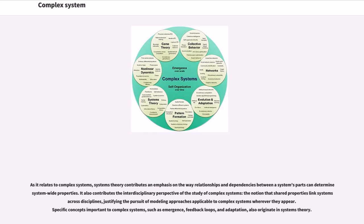As it relates to complex systems, systems theory contributes an emphasis on the way relationships and dependencies between a system's parts can determine system-wide properties. It also contributes the interdisciplinary perspective of the study of complex systems, the notion that shared properties link systems across disciplines, justifying the pursuit of modeling approaches applicable to complex systems wherever they appear. Specific concepts important to complex systems, such as emergence, feedback loops, and adaptation, also originate in systems theory.